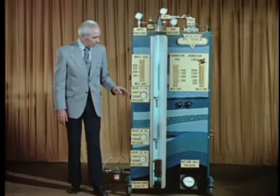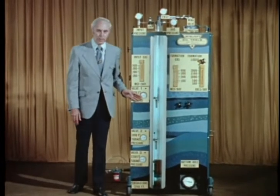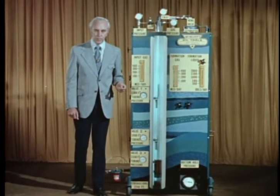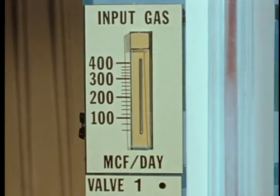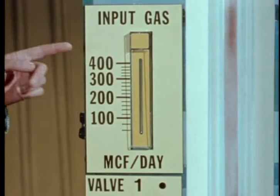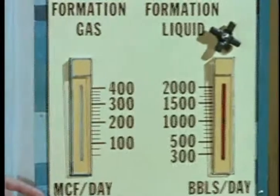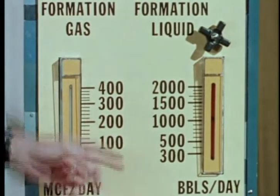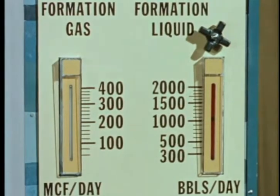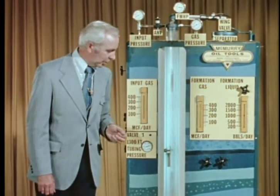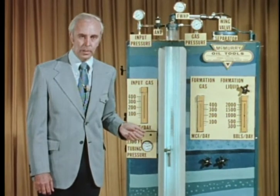In a moment you will be able to see how these pressure readings can be used to draw a graph that will give us the pressure conditions in the well. The model has meters to give us readings of three required flow rates: input gas in thousands of cubic feet per day, formation gas in thousands of cubic feet per day, and formation liquid in barrels per day. In this model, the liquid meter measures only formation liquid — it does not measure the liquid produced from the casing-tubing annulus during unloading operations.